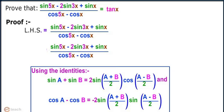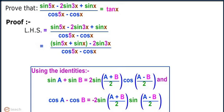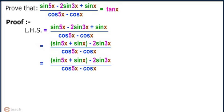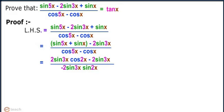The left hand side simplifies to (sin 5x plus sin x minus 2 sin 3x) divided by (cos 5x minus cos x), which further simplifies to (2 sin 3x cos 2x minus 2 sin 3x) divided by (minus 2 sin 3x sin 2x).